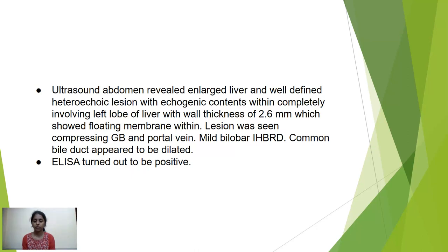Ultrasound abdomen revealed an enlarged liver with a well-defined heteroechoic lesion with echogenic contents, completely involving the left lobe of liver with wall thickness of 2.6 mm, showing floating membranes within. The lesion was compressing the gallbladder and the portal vein. Mild bilobar intrahepatic biliary dilatation was seen and the common bile duct appeared dilated. ELISA was positive for hydatid.